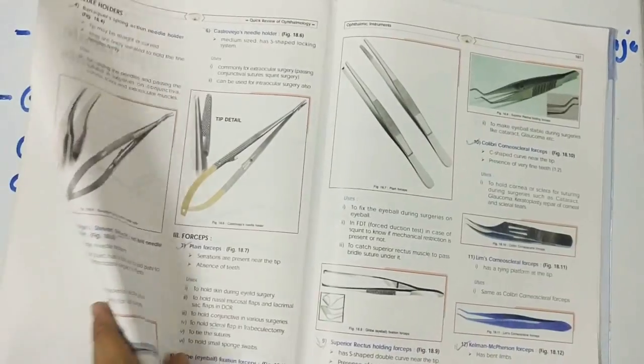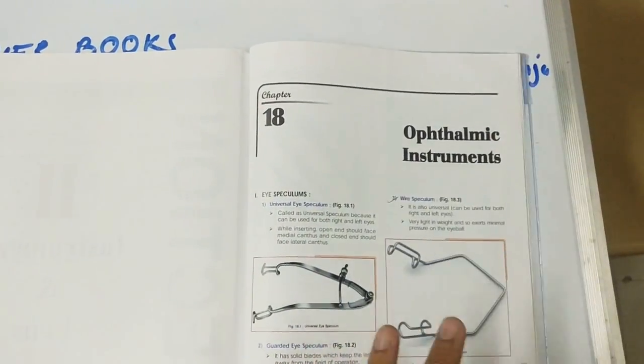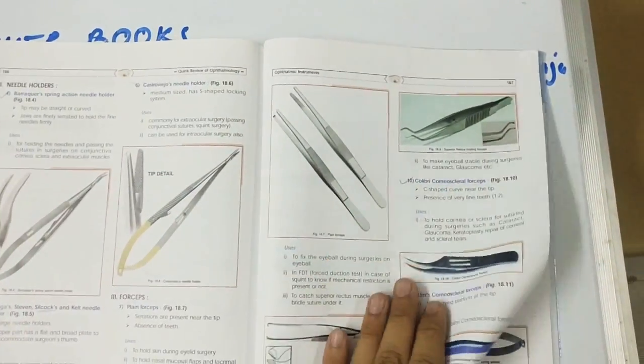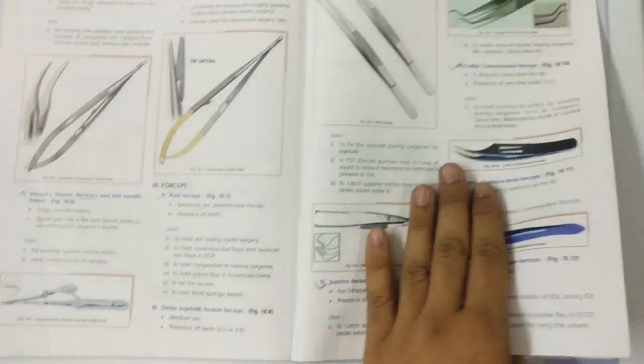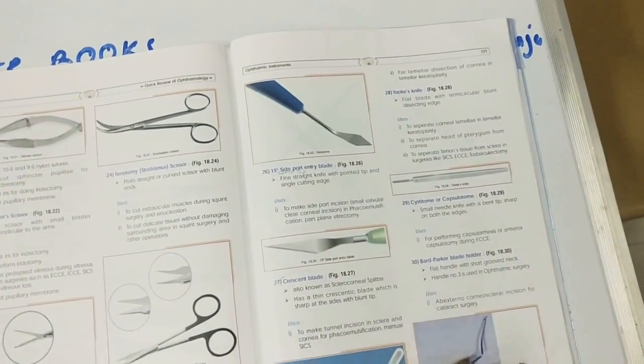It has classified the instruments in speculums, forceps, and knives and blades.